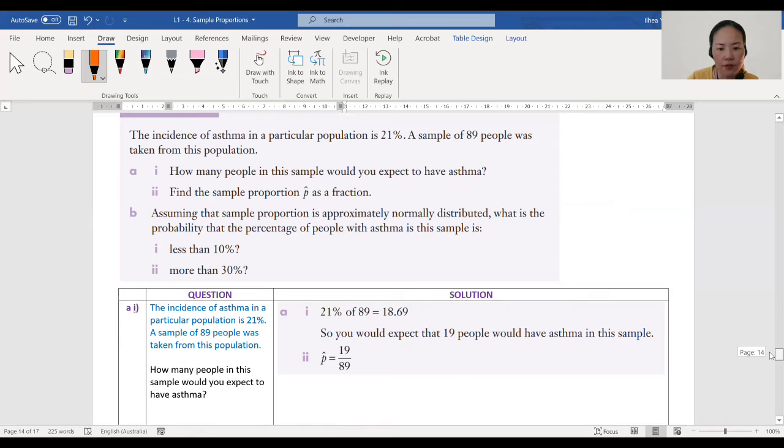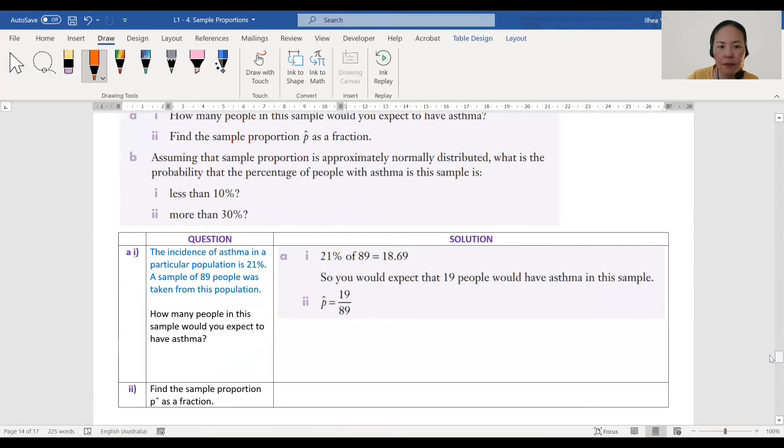Part a is not a tricky question at all. How many people are we expecting to have asthma? It's 21% of 89 people, so obviously 19 people. We can't say 18.69 people, so we round it up to about 19 people. Part ii, the sample proportion p hat is x over n, so we got that x from part one, and the total doesn't change—it's 89—so it's 19 over 89.